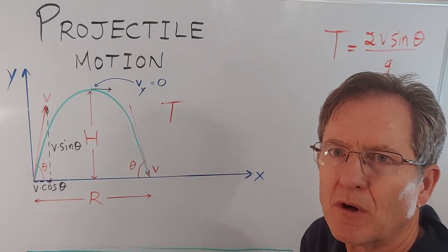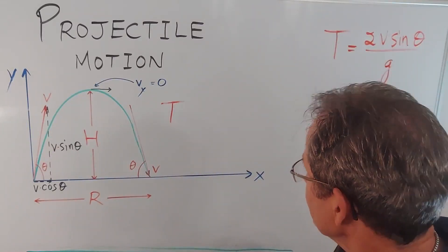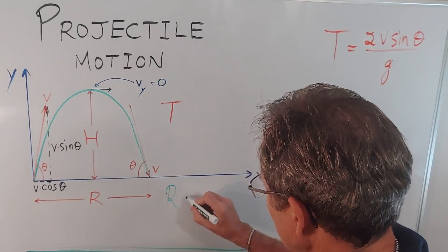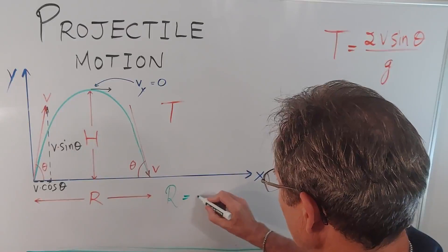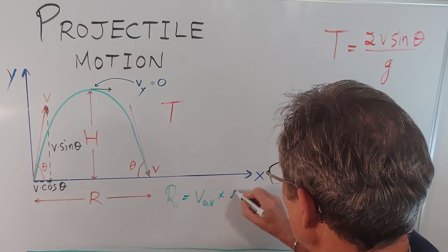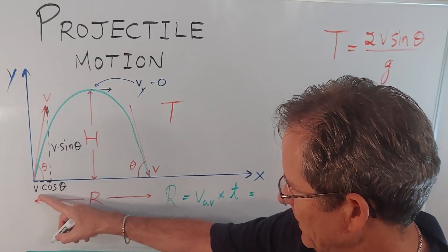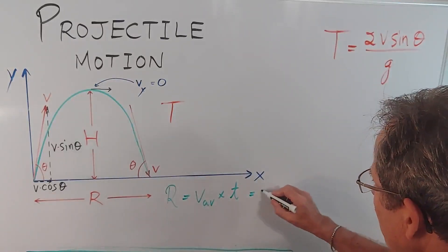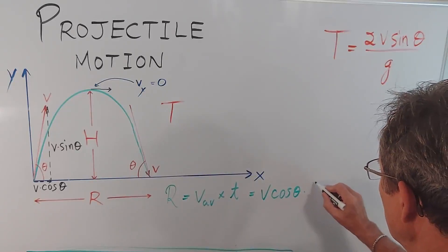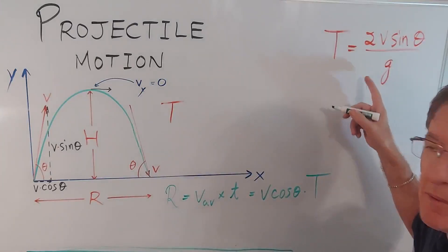So this time let's calculate a formula for the range, the total distance that it travels. Well in physics the range will be the average speed times the time. But the horizontal speed is a constant so the average in that direction is v cos θ and the time is simply the total time capital T.